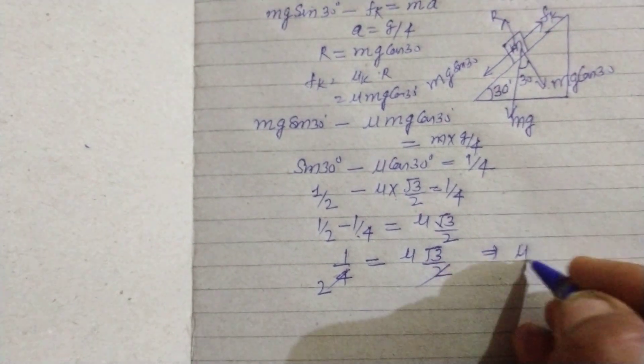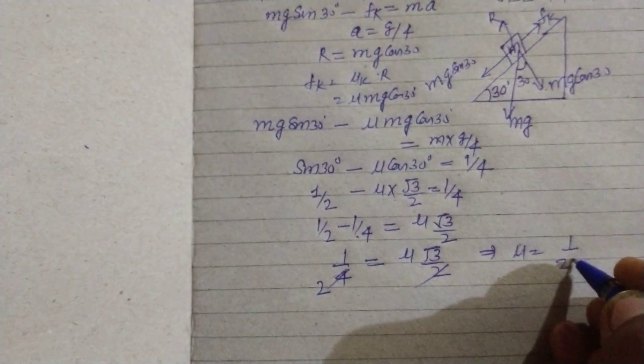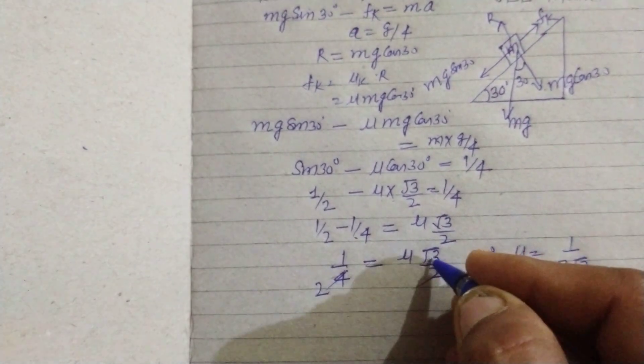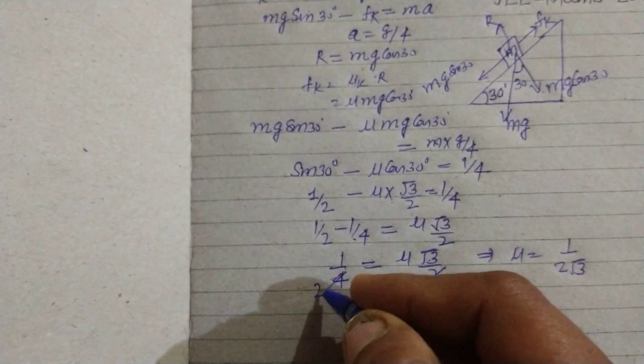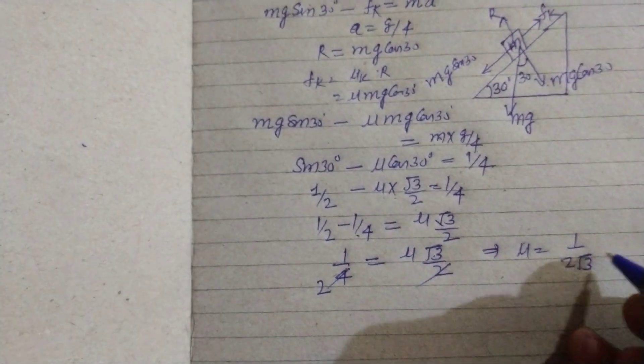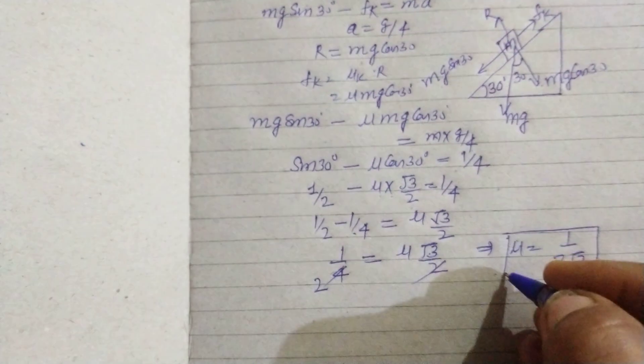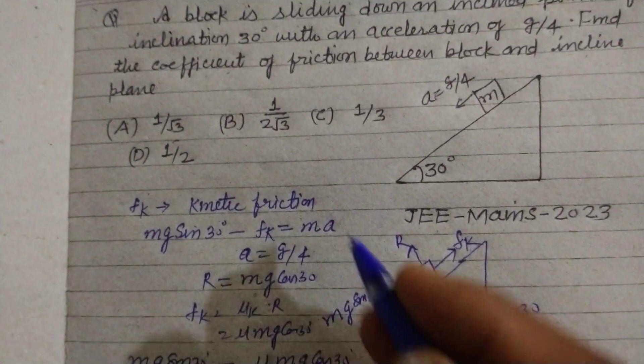So μ equals how much? 1 upon 2 root 3 when we divide this. 1/2 divided by root 3 by 2 we get this. This is the answer to the question which is given in option B.